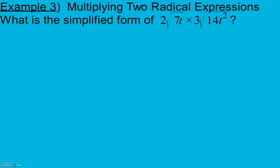In example 3, we're going to multiply two radical expressions. Notice the square root bar — it's a grouping symbol like parentheses. The vinculum (the bar on top) shows exactly what's inside each radical. Using the multiplication property, I can combine both radicands under one radical. I take the square root of 7 times t, and the square root of 14 — which I'll write as 7 times 2 — with t squared.